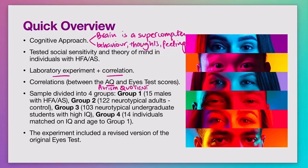The Autism Quotient Test was meant to measure specific traits, because that was an important piece of the study, considering the focus was on how well people who have autism are able to detect and identify other people's mental states. And that is called the theory of mind.